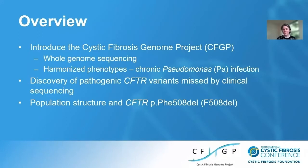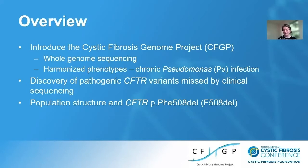I will be providing an overview of the CFGP, or the Cystic Fibrosis Genome Project, which includes whole genome sequencing data and harmonized phenotypes. I'm then going to provide three vignettes of the work we've been doing: a comparison of different definitions of chronic pseudomonas infection, the discovery of pathogenic CFTR variants missed by clinical sequencing, and population structure within the dataset and its relationship to the F508del variant.